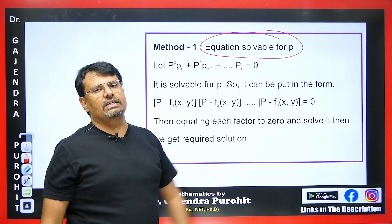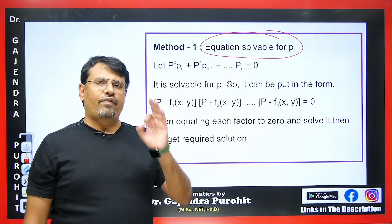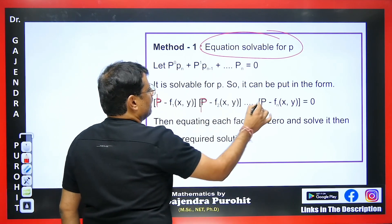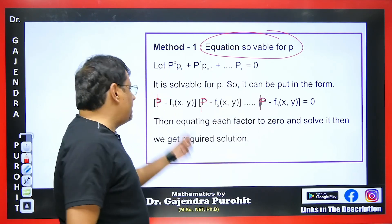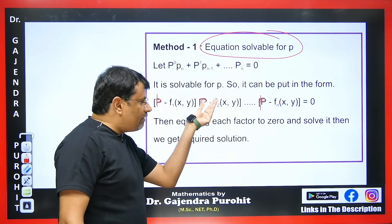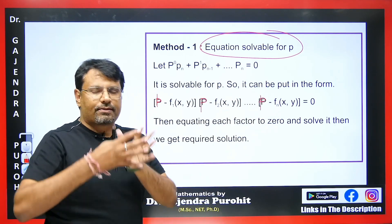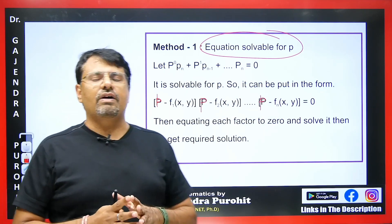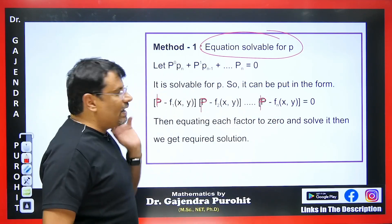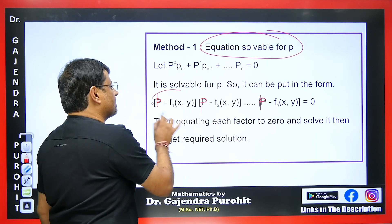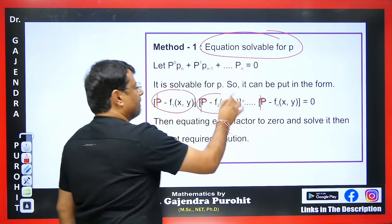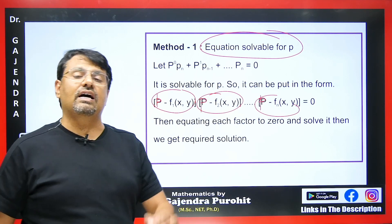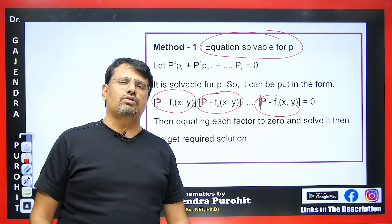By factorizing the equation, we get different brackets. When we factorize, we obtain P separately and put each factor equal to zero: P = F1(x,y), P = F2(x,y), ..., P = Fn(x,y). We get different functions, then substitute dy/dx in place of P and integrate all of them. Whatever answers we get, we write them and multiply together to get the final answer.